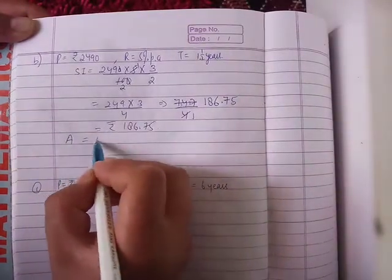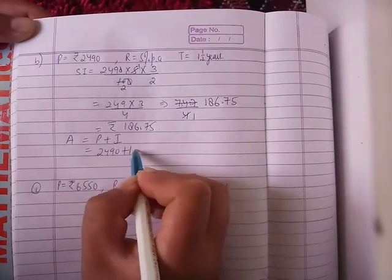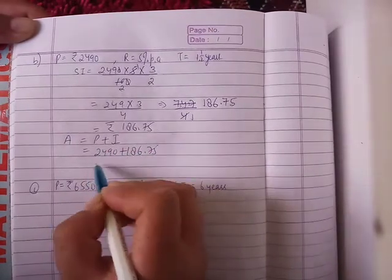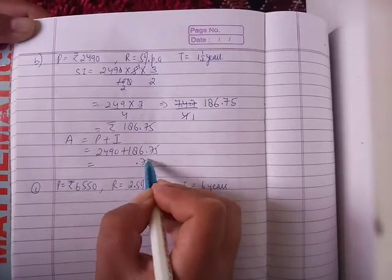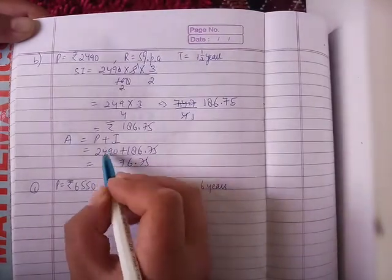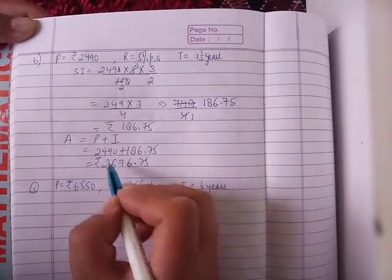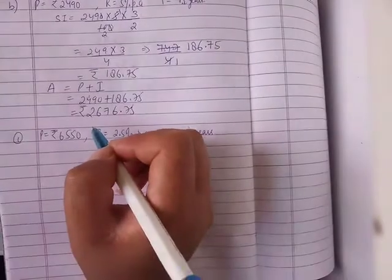Interest is 186.75. Amount is principal plus interest. Principal is 2490 plus interest 186.75 equals 2676.75, the amount.